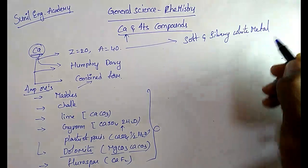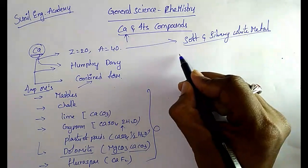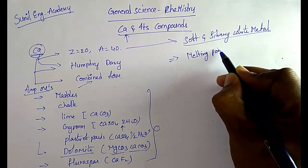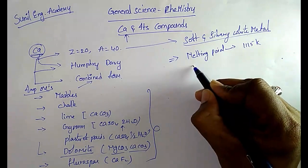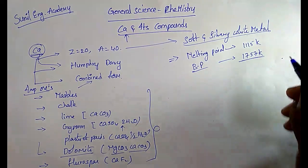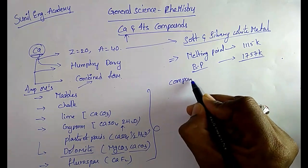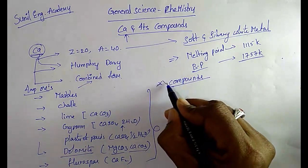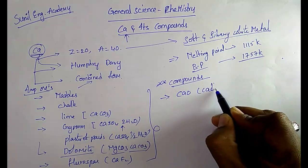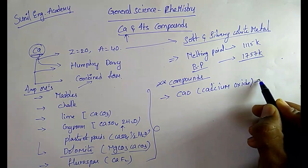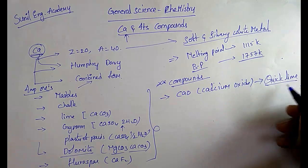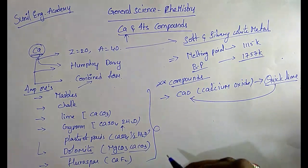Calcium is a soft and silvery white metal. The melting point is 1115 K and the boiling point is 1757 K. Now coming to important compounds: the first one is calcium oxide, CaO. We can also call this quick lime. Quick lime is nothing but calcium oxide.